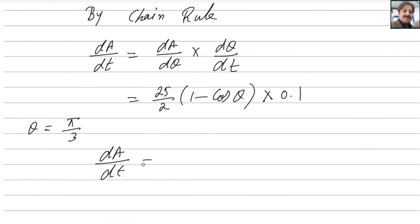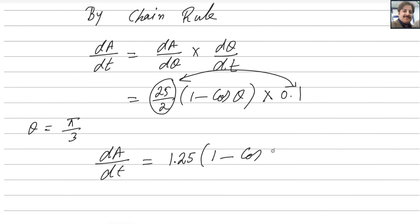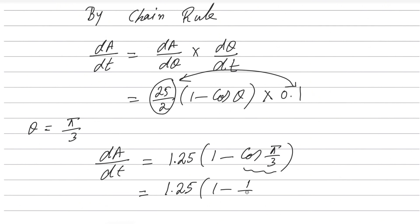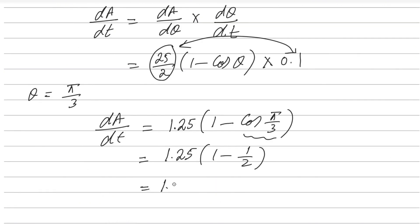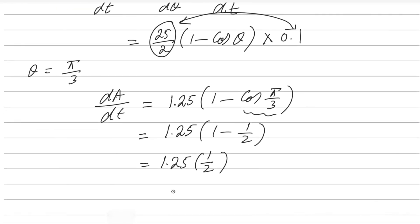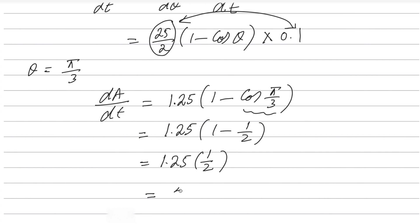dA/dt = (25/2) × 0.1 × (1 − cos(π/3)). Multiplying 25/2 by 0.1 gives 1.25. We know that cos(π/3) = 1/2, so 1 − 1/2 = 1/2. Then 1.25 × (1/2) = 5/8. Therefore dA/dt = 5/8 square centimeters per second. That is the answer for question number 4.